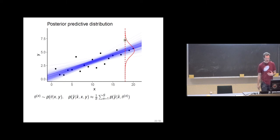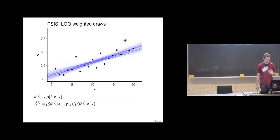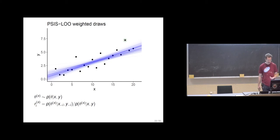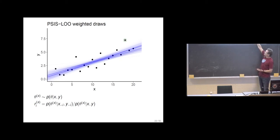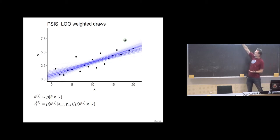We want to evaluate this given a specific value — the circled data point. When we do the leave-one-out cross-validation, we remove this observation. We would like to get posterior draws from the posterior conditional on all the other x's and y's, except that 18th observation which is circled. But we only get posterior draws from the full data posterior. So our full data posterior is our importance sampling proposal distribution, and the leave-one-out posterior is our target distribution; the ratio of those is our importance ratio.